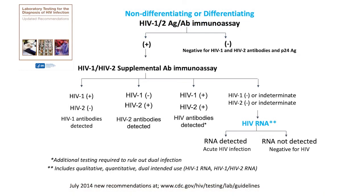This is our algorithm that we're most accustomed to seeing. I've modified it a little to show that now we have not just non-differentiating antigen antibody immunoassays, but now differentiating HIV-1 and HIV-1/2 antigen antibody assays. That can lead to some easier ways to confirm HIV-2 cases or suspected HIV-2 cases, as well as give an idea of whether you will need RNA testing to confirm an HP-24 antigen reactivity.